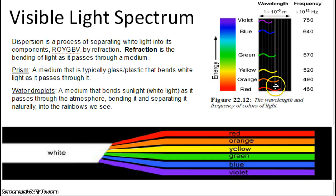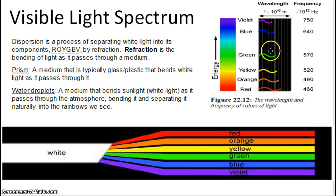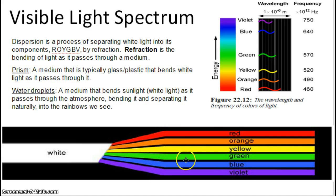Red is going to be a larger wavelength, and as we travel through into orange, it's going to be a little smaller wavelength, and yellow, into green, into blue, and into violet. Violet is going to have the smallest wavelength, and it's also going to have the highest frequency. These characteristics are contained within that white light.